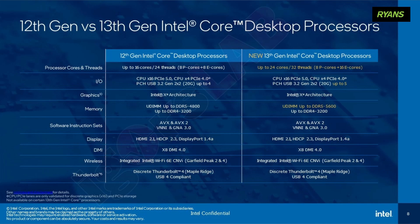For memory, the 13th generation i7 supports DDR5 at 5200MHz, and it also maintains DDR4 compatibility.